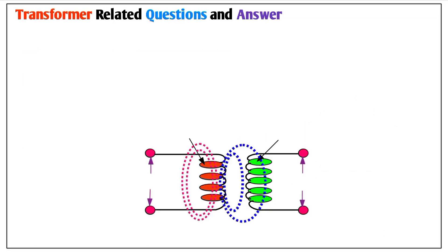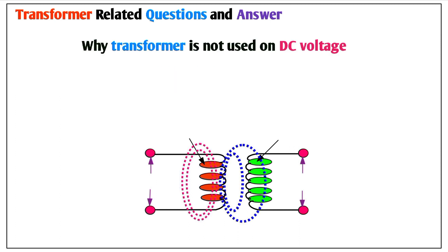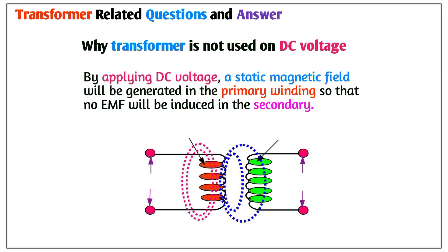Now let's discuss transformer-related questions and answers. Q1: What is a step-up transformer? It is a transformer that converts low voltage to high voltage. Q2: Why is a transformer not used on DC voltage? By applying DC voltage, a static magnetic field will be generated in the primary winding so that no EMF will be induced in the secondary winding.